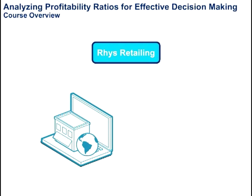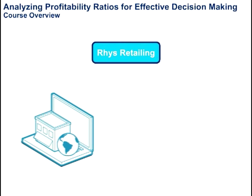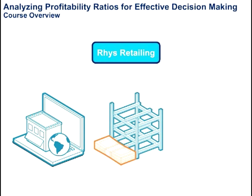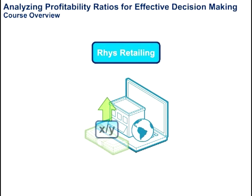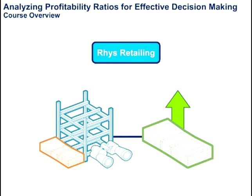Rees Retailing believes that there is the potential to increase sales through Internet Retailing. However, Rees Retailing realizes that the cost structure for Internet Retailing is different than in its current brick-and-mortar structure. Rees Retailing wants to ensure that Internet Retailing will improve rather than worsen its profitability ratios. Therefore, the company will explore how its cost structure forecasts affect profitability.